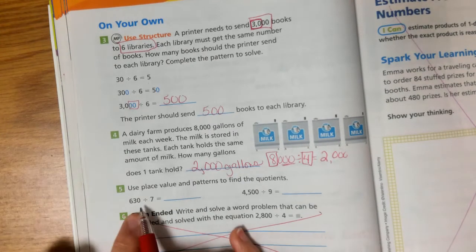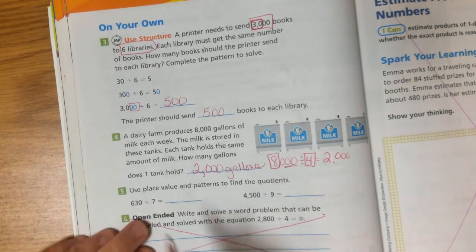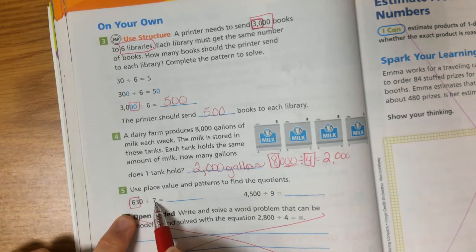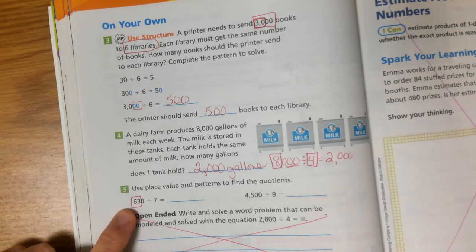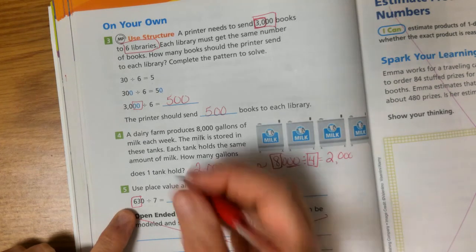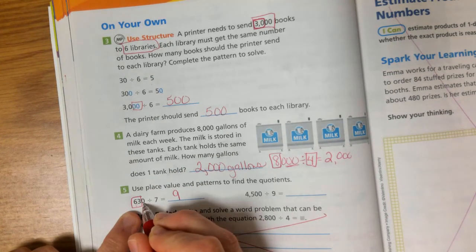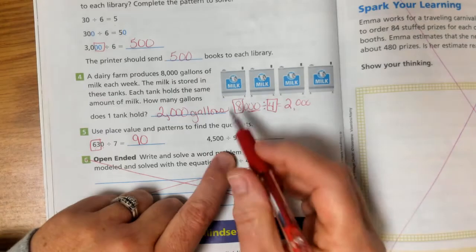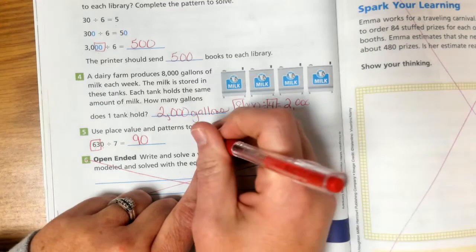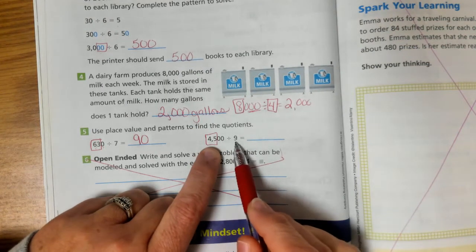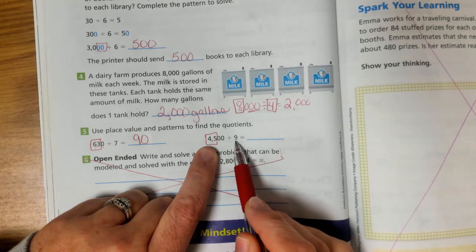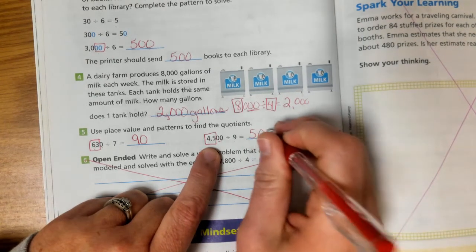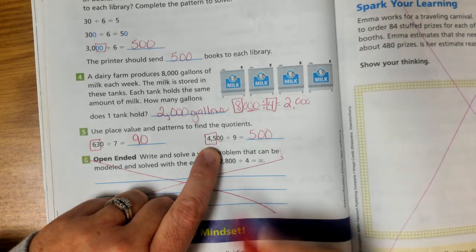Number 5, use place value and patterns to find the quotients. Well, let's look at these. I can see a pattern. I can see something in relation, 63 and 7. 63 divided by 7 equals what? What times 7 equals 63? 9. So I've got 63 tens. So 63 tens divided by 7 equals 9 tens, which is 90. And finally, 4,500 divided by 9. I can see that my 45 can be divided by 9. What times 9 equals 45? 5. And this is 45 hundreds divided by 9. So this would be 500. 45 hundreds divided by 9 equals 500.